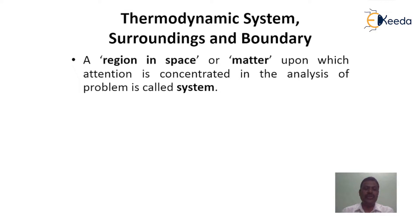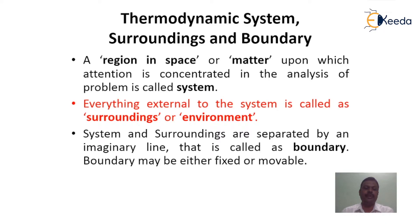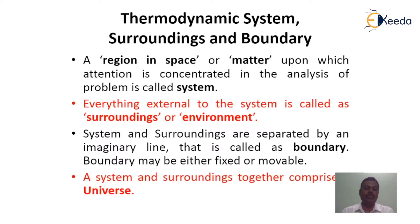A region, space or matter upon which our study is concentrated in the analysis of the problem is called as system. Everything external to the system is called as surroundings or environment. System and surroundings are separated by an imaginary line, which is called as boundary. Boundary may be either fixed or movable. Both system and surroundings together comprise a universe.